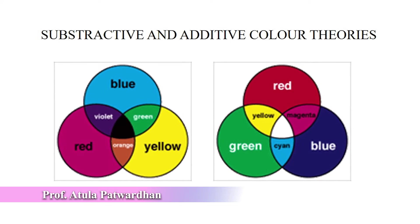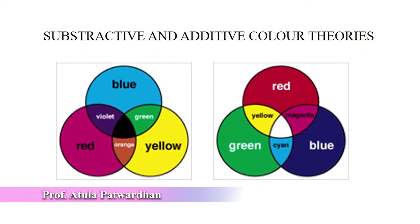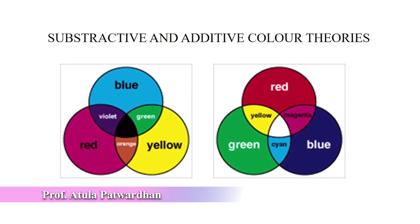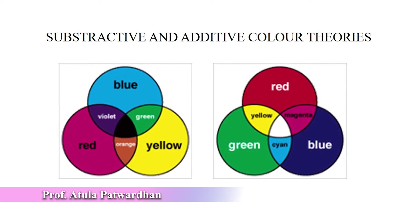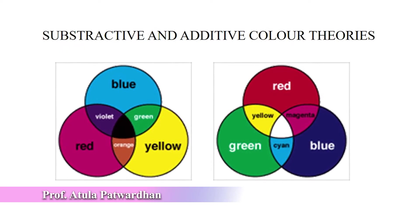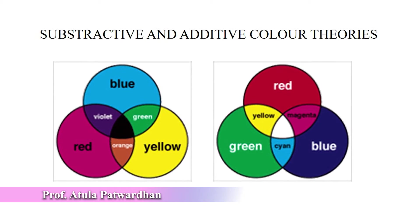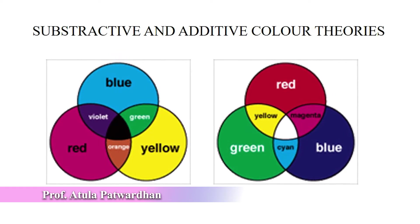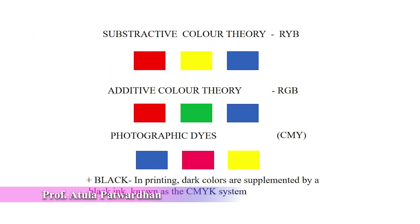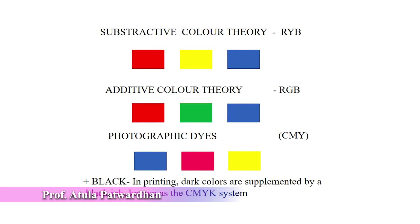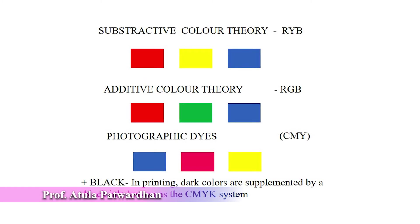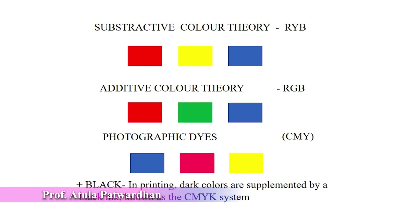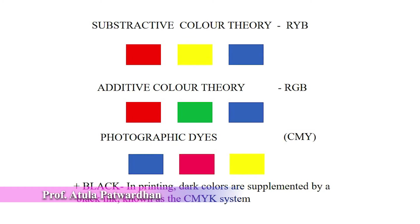There are two types of color theories: subtractive and additive color theory. In the subtractive color theory, there are three colors — R, Y, B: red, yellow, and blue. Combined together, you will get black. That means in this theory, the intensity of light reduces. In the additive color theory, there are R, G, B: red, green, and blue. If combined together, you will get white. That means in this theory, intensity of light increases.